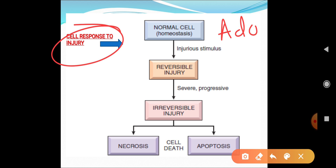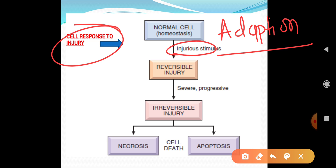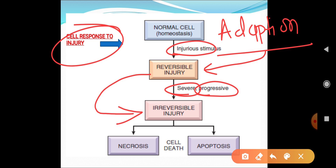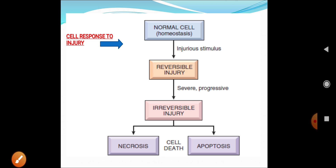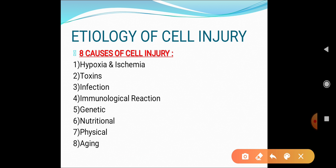Remember: the cell first tries to adapt to the new situation. If the injury stimulus persists, it undergoes reversible cell injury. If the injury stimulus is still not removed and is persistent or severe, the cell undergoes irreversible cell injury. Once irreversible cell injury occurs, the cell will certainly die — either in the form of necrosis or apoptosis. These are the two processes of cell death.